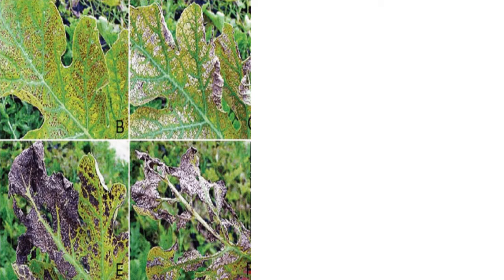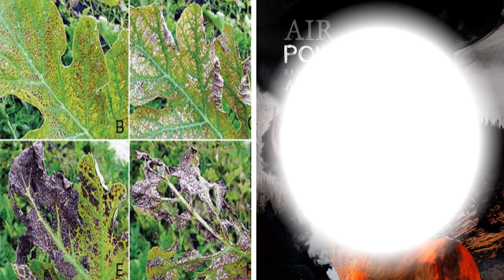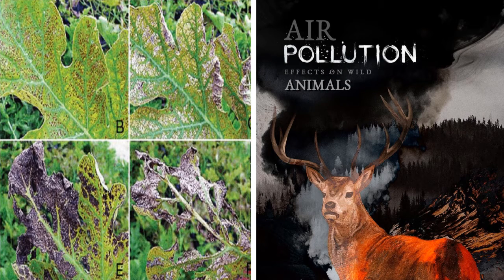The effects of air pollution are deadly for plants as well as for animals. The effects seen in plants are: stomata get closed, slowing down of photosynthesis, growth in plants is retarded, and leaves fall off or become yellow. Whereas in animals we can see respiration problems, irritation of eyes, and several other problems.